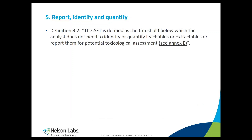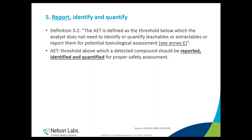There is a clear definition of the AET in this new final draft. It is defined as the threshold below which the analyst does not need to identify, quantify, or report leachables or extractables for potential toxicological assessments — see Annex E. In other words, it is a threshold above which a detected compound should be reported, identified, and quantified for proper safety assessment. But how do you exactly determine it? Is there a specific guideline?